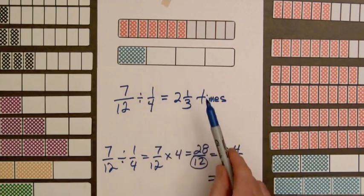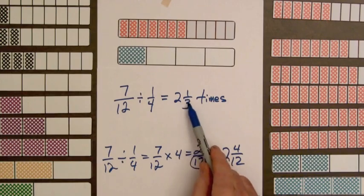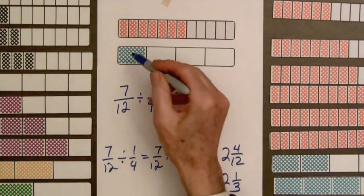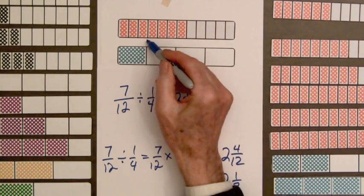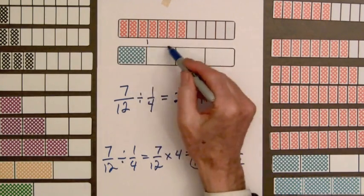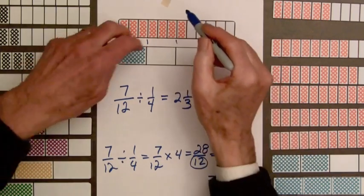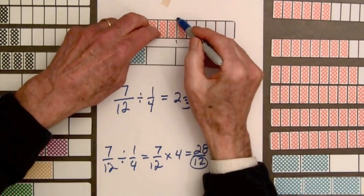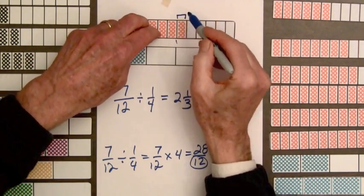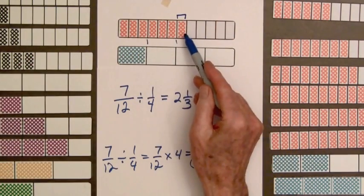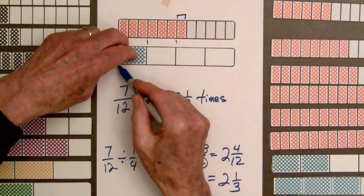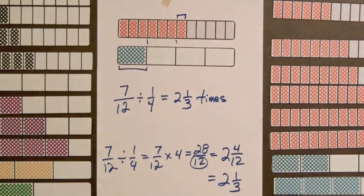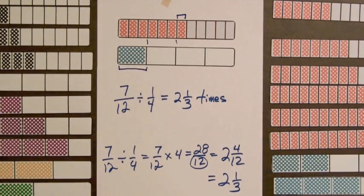So this is two and one-third times around the track. Notice from the bars that two and a third times makes sense. The shaded amount of the one-fourth bar fits in once, fits in twice, and the remaining amount of the seven-twelfths bar is one-third as big as the shaded amount of the one-fourth bar.